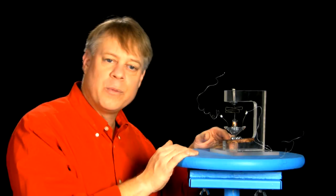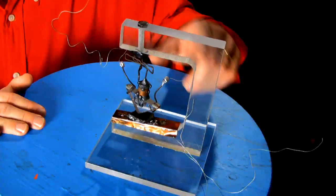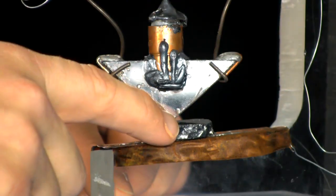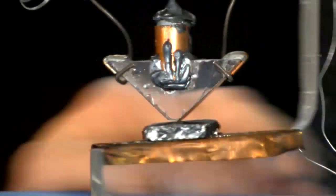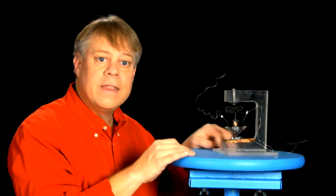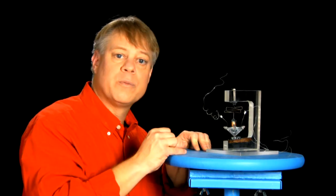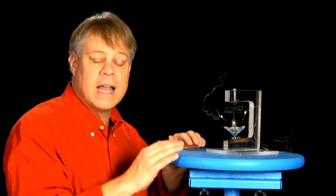In 1947, Walter Bratton at Bell Labs fashioned it out of a plastic stand, a chunk of germanium, and a plastic triangle. On each side of the plastic triangle there's gold foil, and then on top there's a spring which presses the apex of the triangle into the germanium. That's why it's called a point contact transistor.